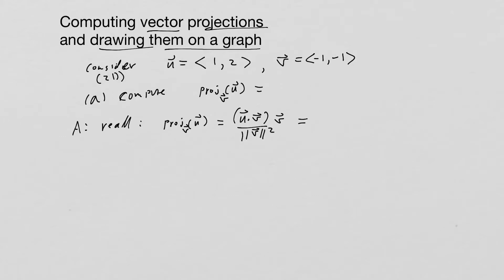So let's compute now the first part, u dotted with v. That's simply going to be <1, 2> dotted with <-1, -1>, that's going to be 1 times -1 minus 2, which is going to be -3. So that's the value there.